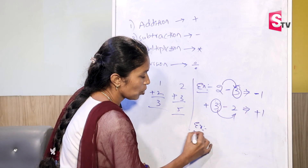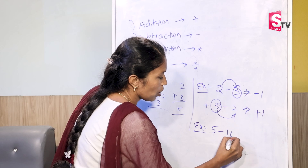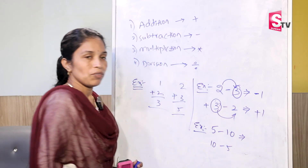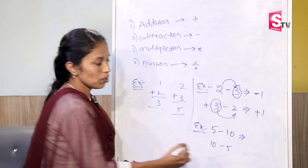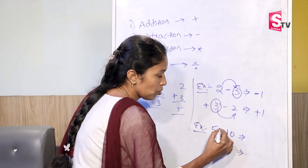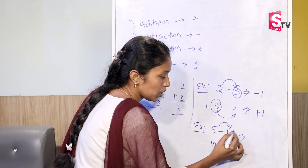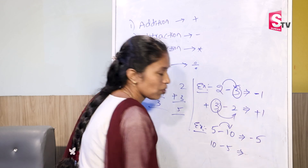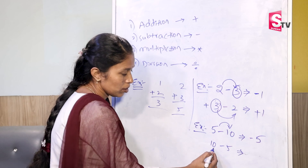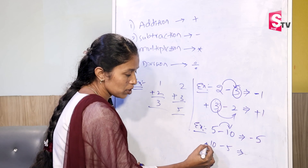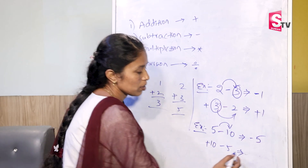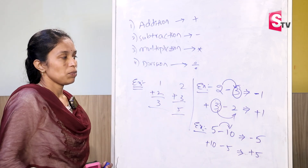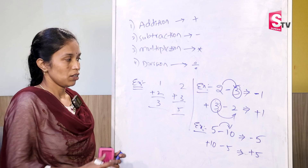Similarly, we can take one more example. What is the value of 5 minus 10 and 10 minus 5? For 5 minus 10, the highest number is 10 with a minus sign, so the answer is minus 5. For 10 minus 5, the highest number is 10 with a plus sign, so the answer is plus 5. This is the main difference between addition and subtraction.